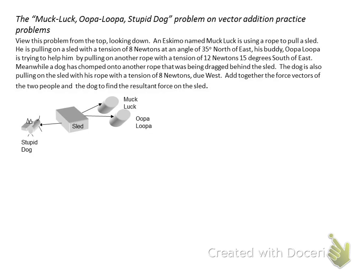We have three forces that we want to add together. We've got the two Eskimos pulling one way and the stupid dog pulling the other way, and we want to know the resultant of all these different forces. One going one way, one going the other way. Do they cancel out? What do all these forces do when I add them together?